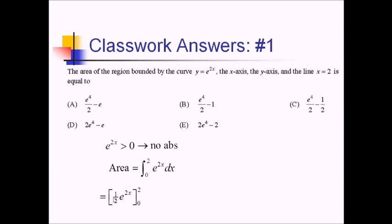Pulling the 1/2 outside, inside we have e to the 2 times 2 minus e to the 2 times 0. That's 1/2 times e to the 4th, or e to the 4th over 2, minus 1/2 times 1, so minus 1/2. That gives us answer choice C.